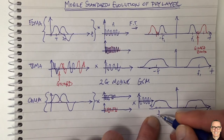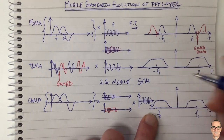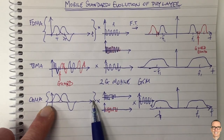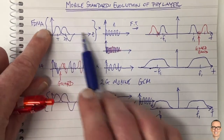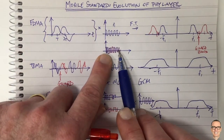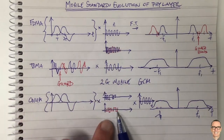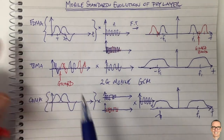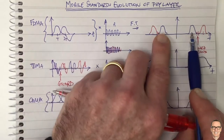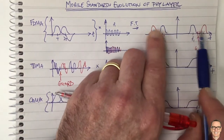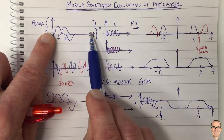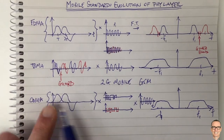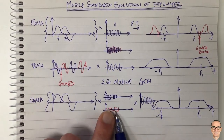In the frequency domain for CDMA, the spectrum is spread. All users send all of the time, just like in FDMA. In FDMA, users were separated by different analog carriers. In CDMA, they're separated by different codes, using all of the frequency all of the time. So: FDMA uses some of the frequency all of the time; TDMA uses all of the frequency some of the time; and CDMA uses all of the frequency all of the time, with separation by codes.